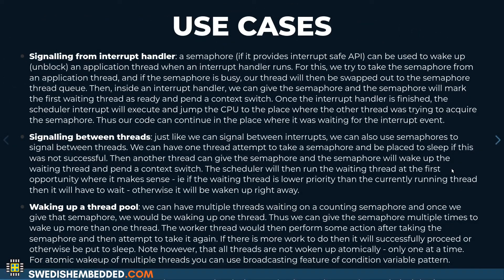The main use case of the semaphore is signaling from an interrupt handler — this is the first pattern which allows us to unblock a thread that is waiting for something to happen. If we have an event that triggers an interrupt handler, we can give the semaphore from the interrupt handler, and then the thread will become unblocked, as long as it's waiting for the same semaphore, and it can continue.